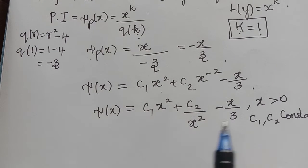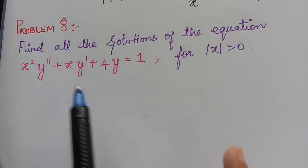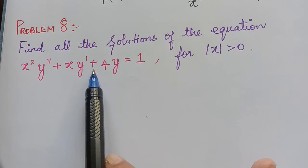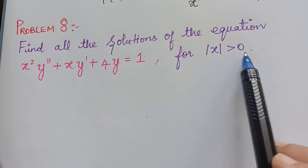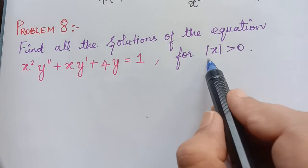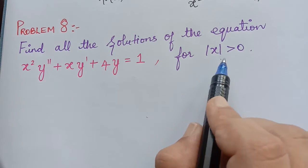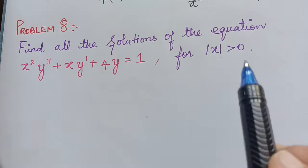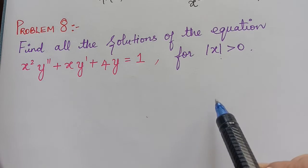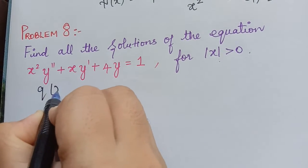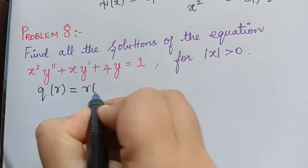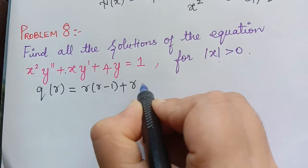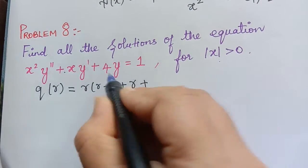We will solve another problem of the same kind. Find all the solutions of x squared y double dash plus x y dash plus 4y equals 1, for modulus of x greater than 0. It is important to observe that the domain is given as modulus of x greater than 0, so our solution should be in terms of modulus of x.